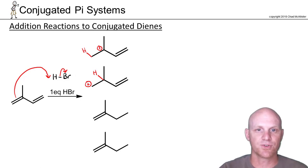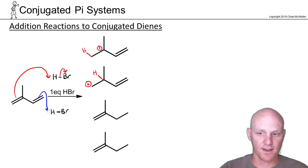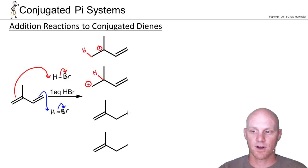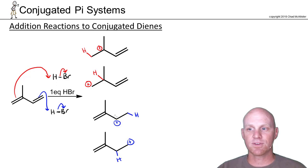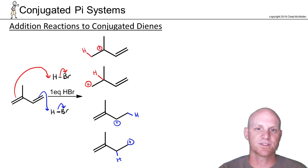The other option is to have the other pi bond be the one attacking HBr. If this pi bond attacks, we'd put H either on the less substituted side — leaving the more substituted carbocation — or on the more substituted side, leaving the less substituted carbocation. So the big difference here is that we've got carbocations in four different possible places.